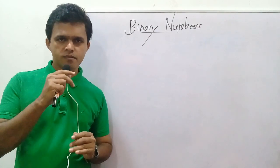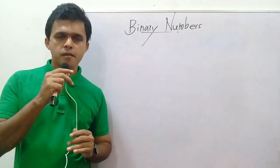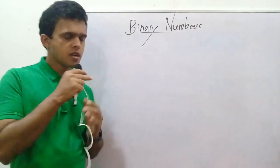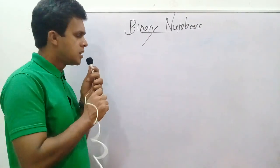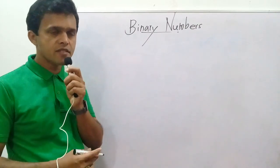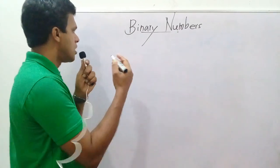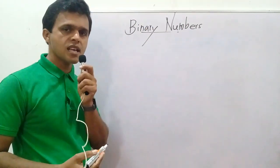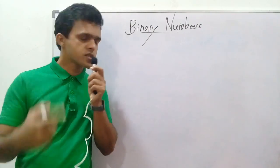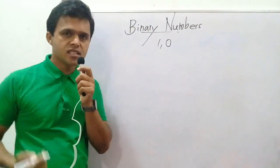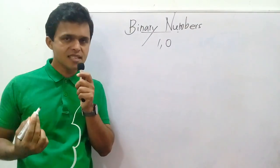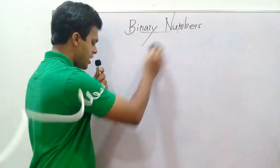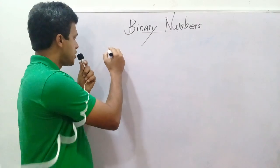I am going to teach you addition of binary numbers. To learn addition of binary numbers you should know these relations. Binary means two numbers — these are the two digits that are applied: one and zero.